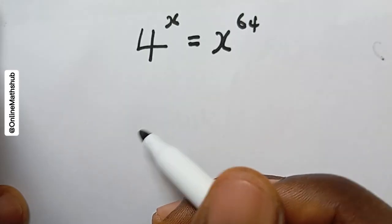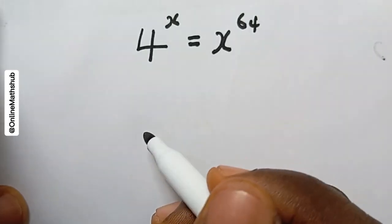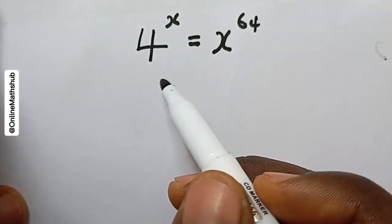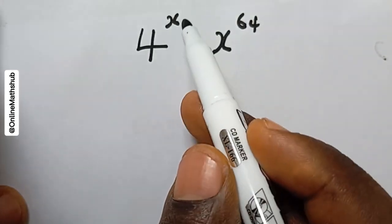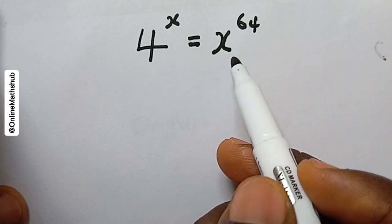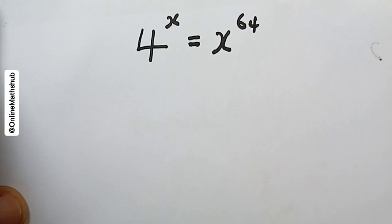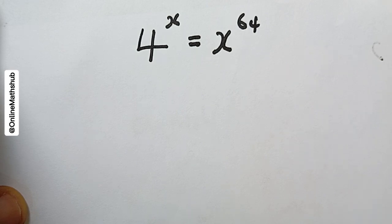Hello friends, welcome back. We're going to be solving this equation: 4 to the power x is equal to x to the power 64. I want to find out the value of x that is actually going to satisfy this interesting equation.